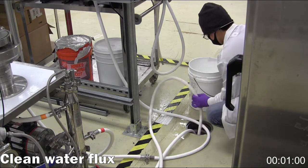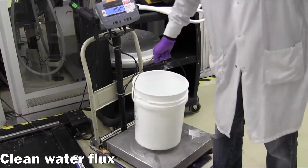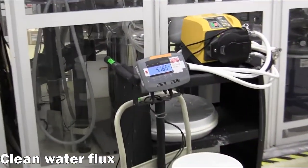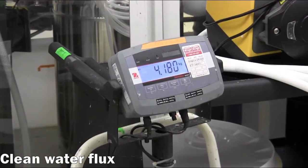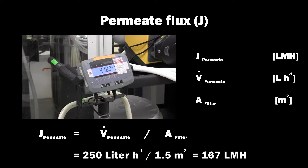Then, the mass of water is used to calculate a flow rate and flux value using the membrane surface area. In this example, the clean water flux is 167 liters per square meter hour.